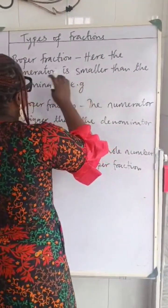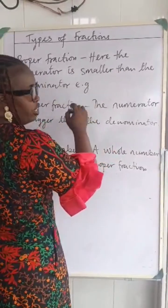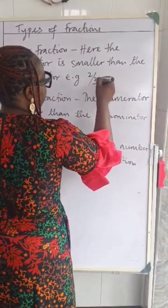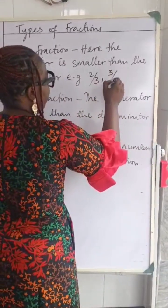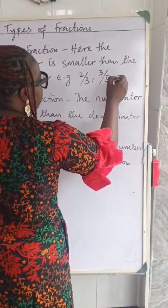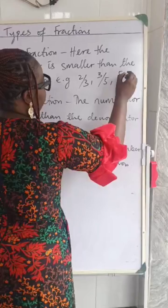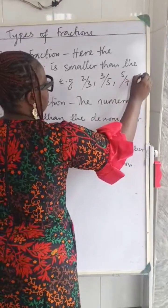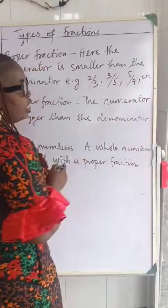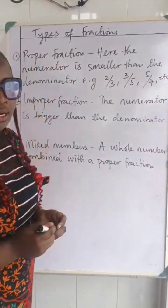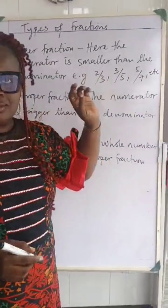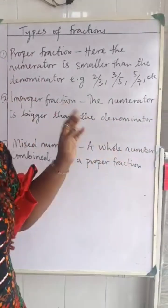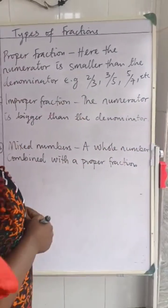Examples of proper fractions: we'll have 2 over 3, 3 over 5, 5 over 7. Here you'll find out that the numerators are smaller than the denominators.